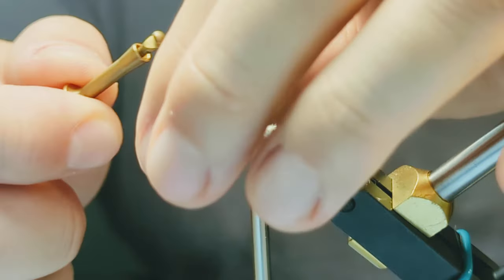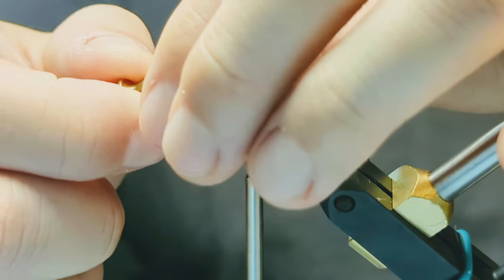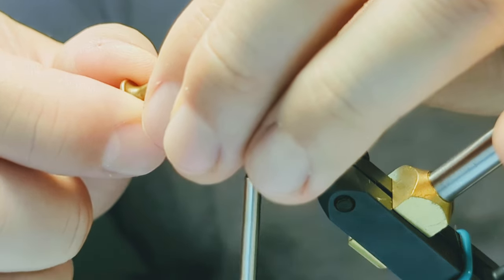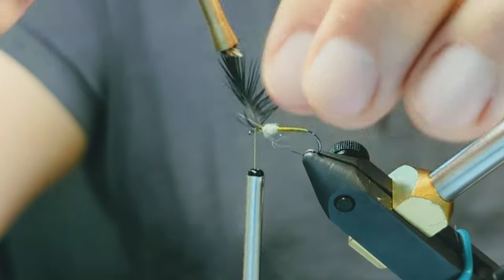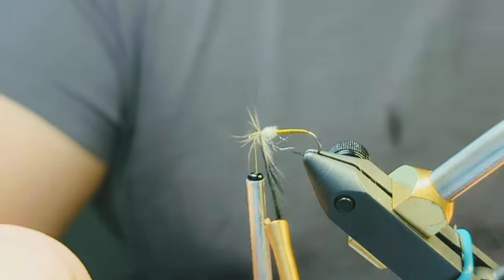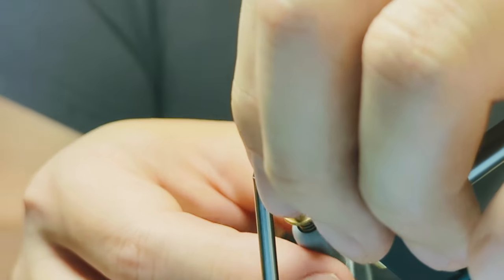For the collar, use hackle pliers and grab the tip of the feather. As you take touching wraps, keep grooming the fibers rearward, trying your best to avoid having any fibers stick out towards the front of the fly.